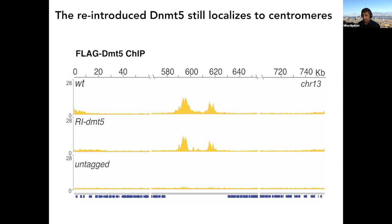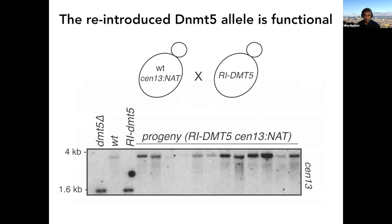We showed this reintroduced allele is functional by a genetic cross. A wild-type cell with a centromere marked with nourseothricin resistance is crossed to the reintroduced DNMT5 strain (which has no DNA methylation). In progeny containing the reintroduced DNMT5 allele but the centromere from the wild-type strain, the originally methylated centromere stays methylated. So the reintroduced allele is a perfectly functional maintenance enzyme.